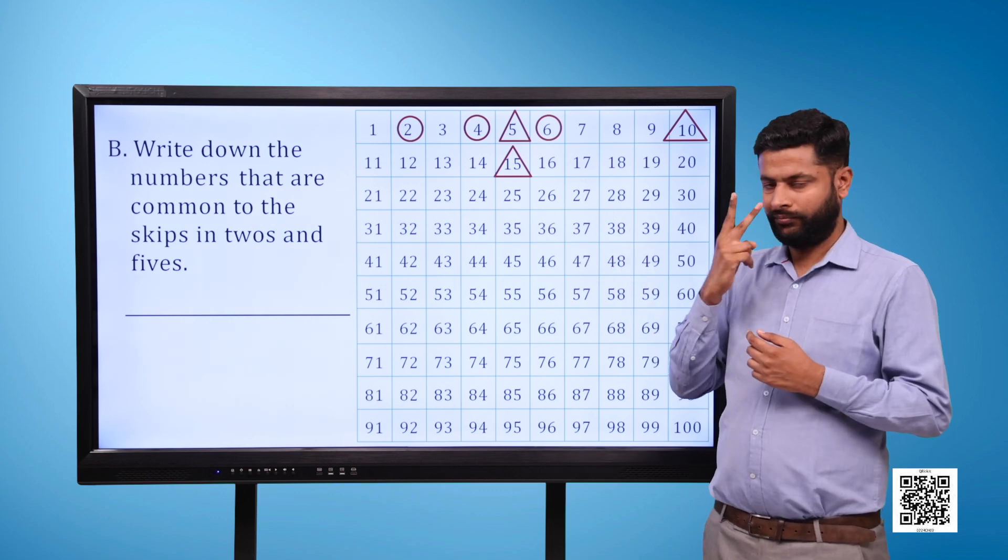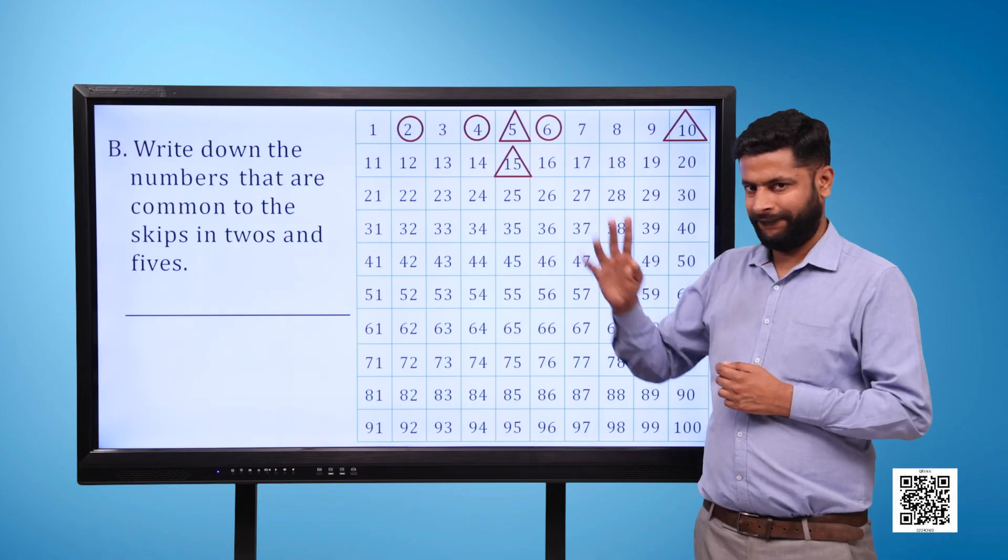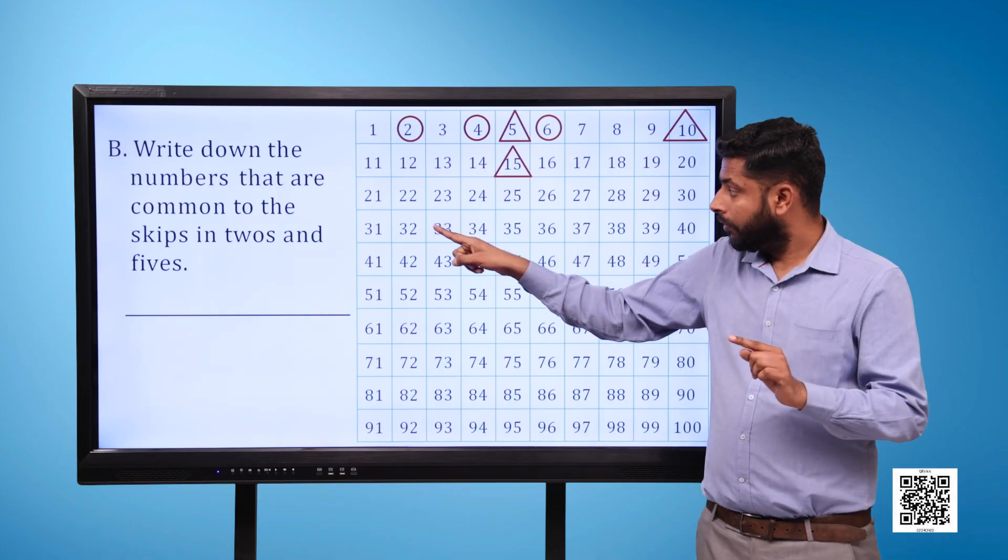Write down the numbers that are common to the skips in 2s and 5s.